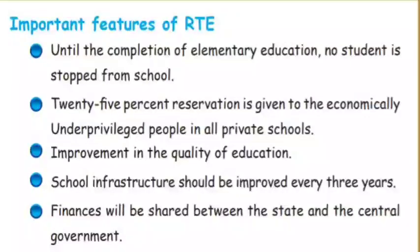So in the last class we learned about RTE. The full form of RTE is Right to Education. The main aim of Right to Education is to promote education among children of the age group 6 to 14 years. In order to give free and compulsory education to children of age 6 to 14, the Right to Education Act has been enacted.